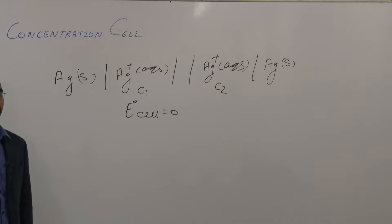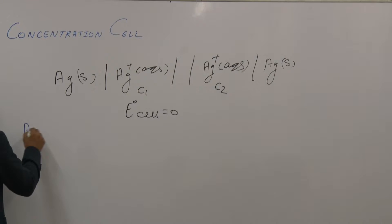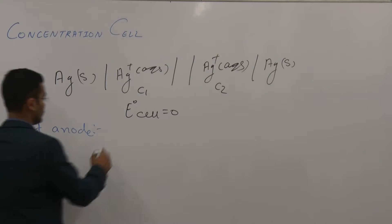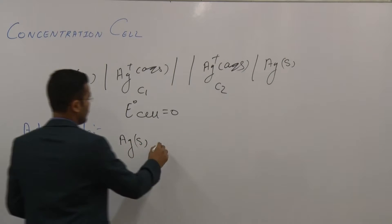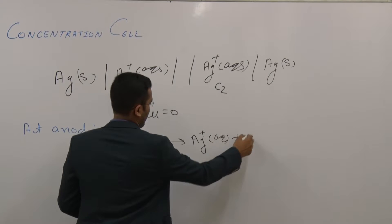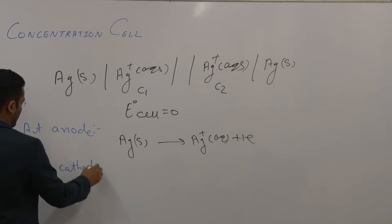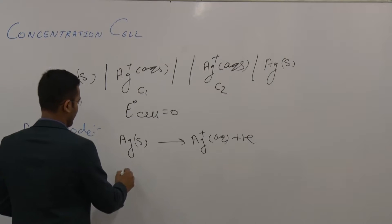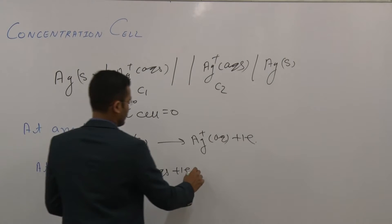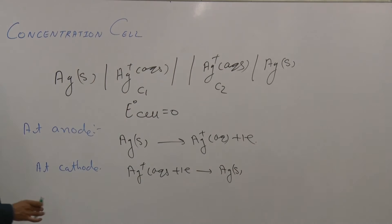Now we have to write the balanced cell reaction. At the anode, Ag solid will form Ag⁺ aqueous plus one electron. At the cathode, Ag⁺ aqueous will accept one electron to form Ag solid.